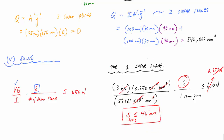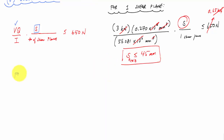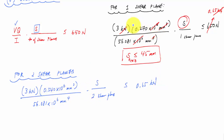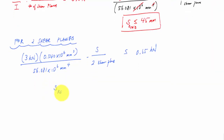For the two-shear-plane case: VQs / (I × 2) ≤ F_allow → (3 × 0.540×10⁶ × s) / (56.081×10⁶ × 2) ≤ 0.65 kN. Dividing 0.540 by 2 gives the same numerator as the one-shear-plane case, yielding the identical result: s ≤ 45 mm. Both approaches give consistent answers, as they should.